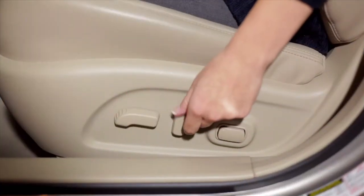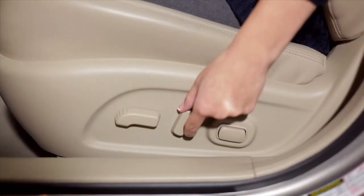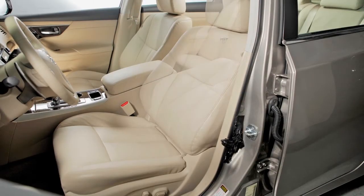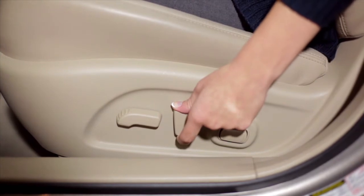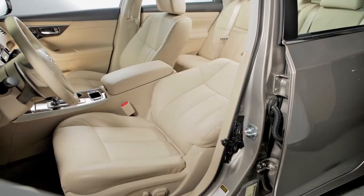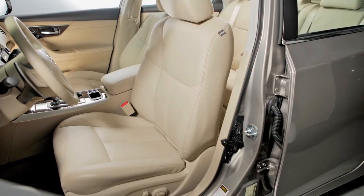To make the seat recline, move this recline switch backward until you achieve the desired position. To bring it back upright, move the switch forward and lean forward. The seatback will return to the more upright position.